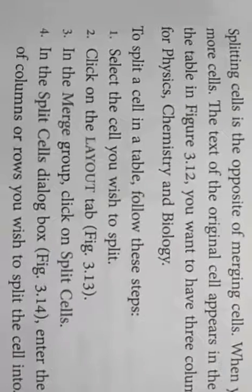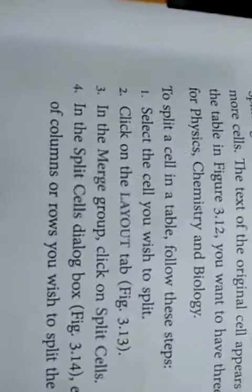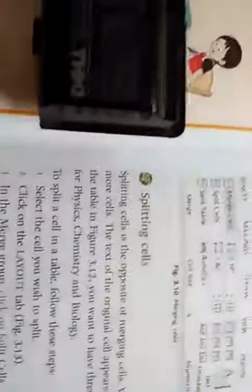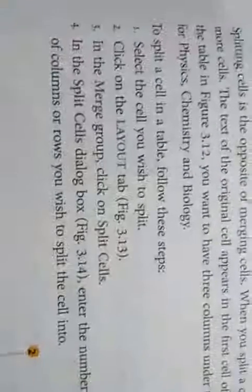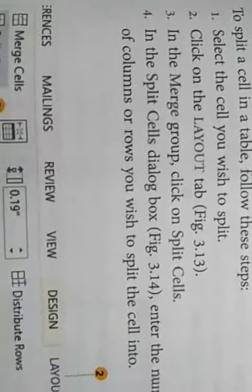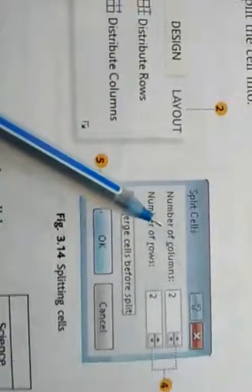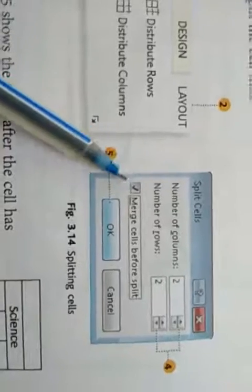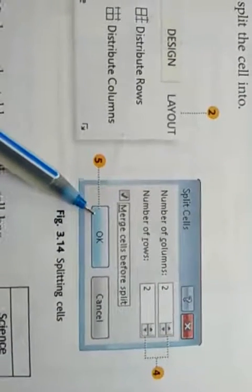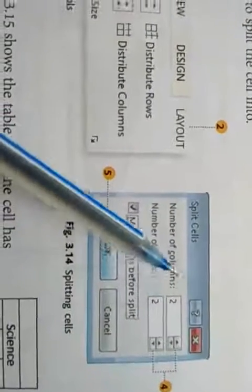The option is on the same tab. First we will select a single cell, then click on the Layout tab and select the Split Cell option from the Merge group. When we click on Split Cell, a dialog box will appear. In that dialog box we have to enter the number of columns and number of rows, then click OK. The one cell will then be divided into the specified rows and columns.